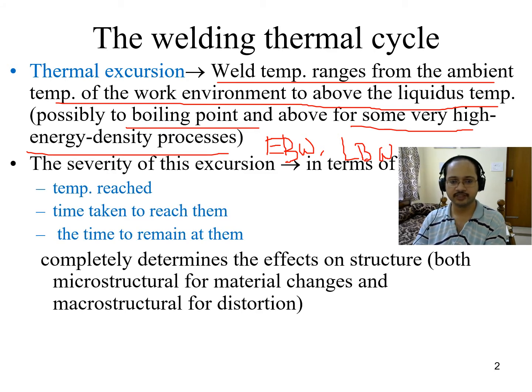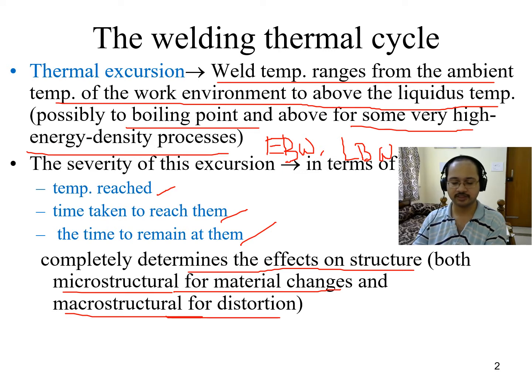The severity of this excursion in terms of temperature reached, time taken to reach that temperature, and time to remain at that temperature completely determines the effects on structure both at microstructural and macrostructural levels - microstructural for material changes and macrostructural for distortion. We have already seen the differences in atoms and lattice structures.